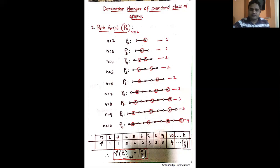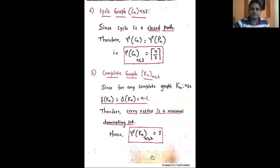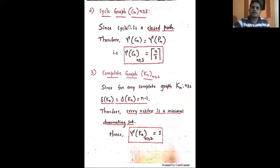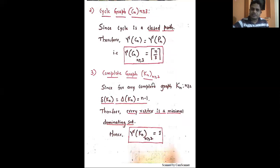Next, consider the cycle graph. The smallest cycle has 3 vertices, so we take C_n with n greater than or equal to 3. Since every cycle is a closed path, the domination number of cycle graph C_n is again the ceiling function of n divided by 3.